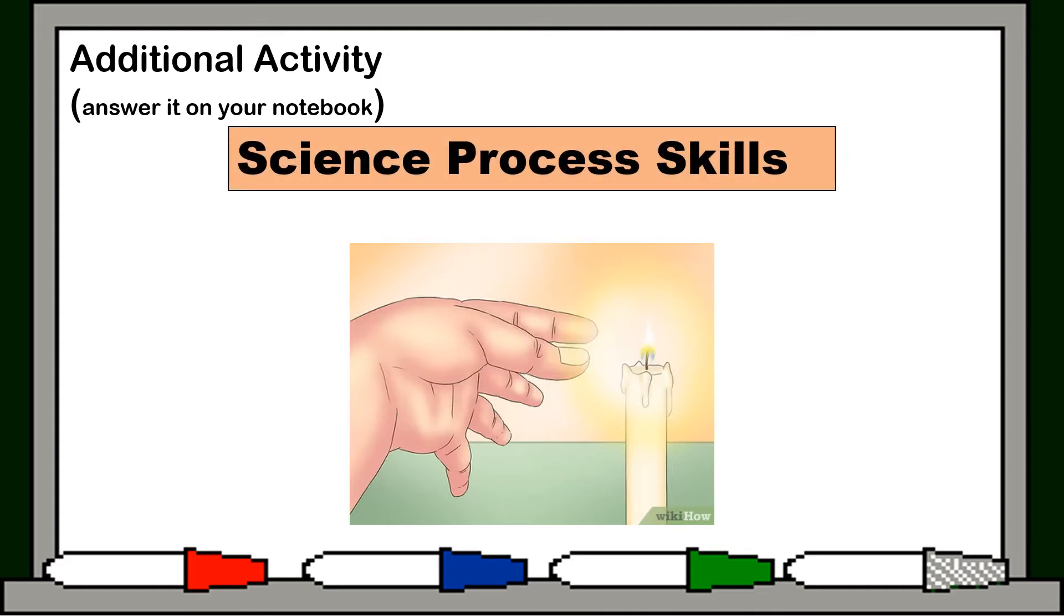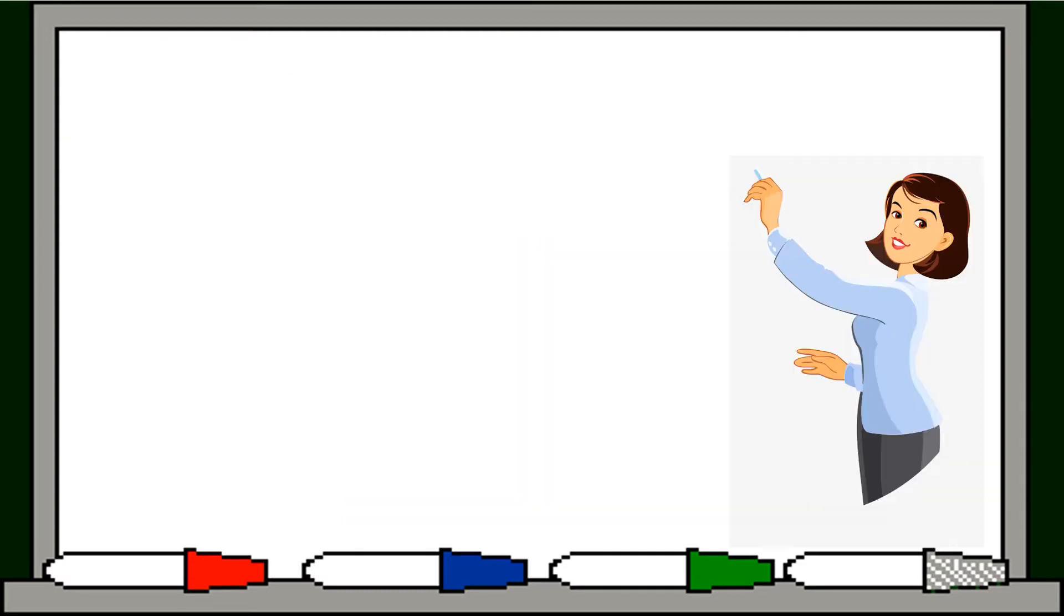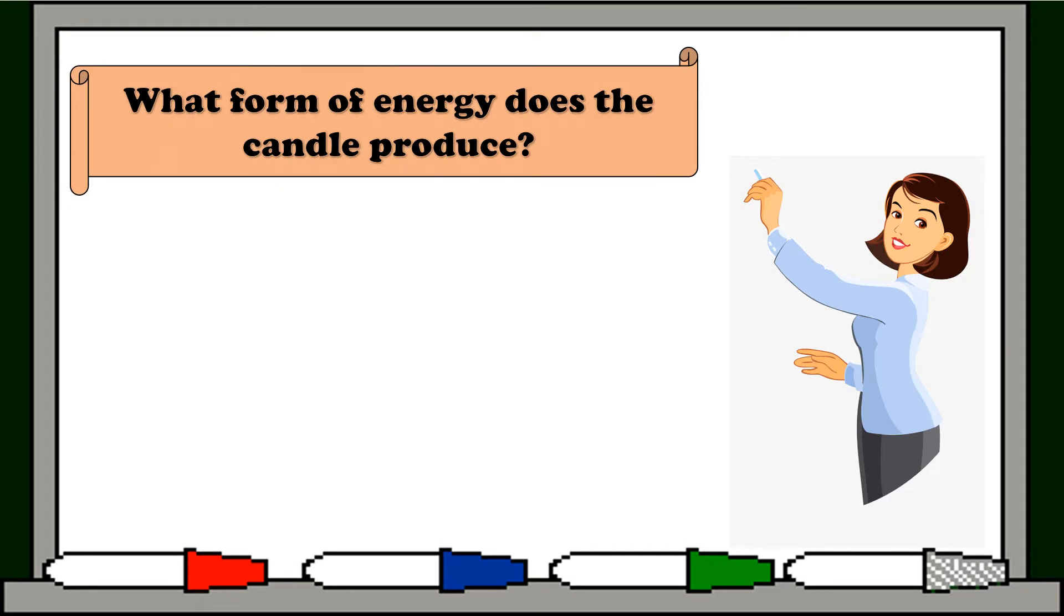For science process skills, light a candle, put your hand close to the flame, then observe the heat and light. What did you see? What did you feel? You see the light and you feel the warmth of the flame. So light and heat are related to each other. Whenever there is light, heat is always present. So the question is, what form of energy does the candle produce?